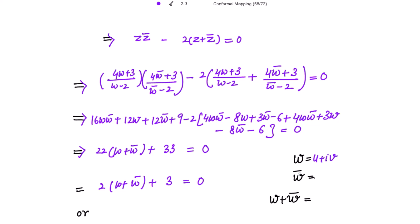Writing w = u + iv, the sum of w and w̄ gives twice of u. From here we get 2·(2u + 3) = 0, which implies 4u + 3 = 0. That is the required straight line. Thank you.